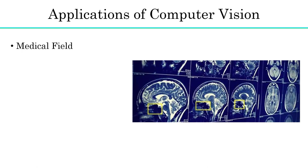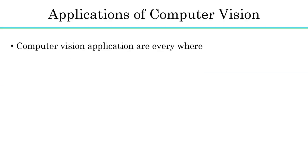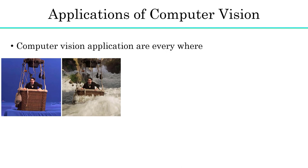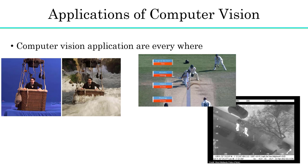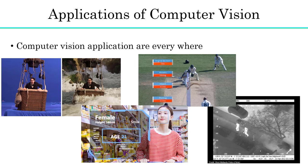Computer vision can also be applied to the medical field - analyzing X-rays, MRI, and cellular structures using computer vision algorithms. Computer vision is now present in many areas of your life, whether you realize it or not. We can apply computer vision algorithms to visual effects in movies, and in sports like cricket and football - for example, tracking a ball in cricket. There are also many applications in military, license plate detection, and retail, such as identifying gender, age, and emotion using face recognition.